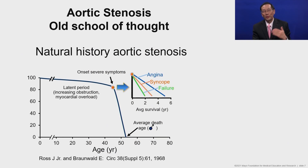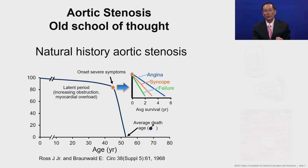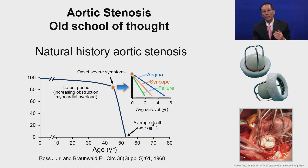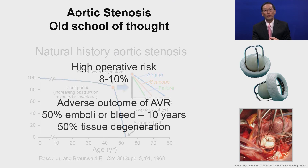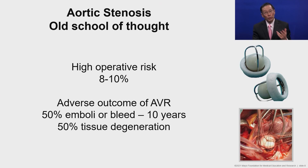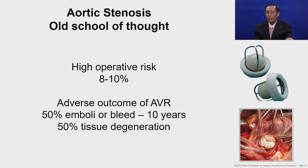This is the familiar natural history slide of aortic stenosis by Ross and Brownwell, put together back in the 1960s. At that time, we had old-fashioned mechanical valve prostheses and old-fashioned tissue bovine or pericardial prostheses. There was a high operative risk in the early days with aortic valve replacement, and these valves had a lot of complications.